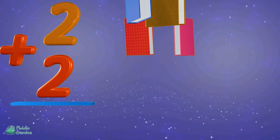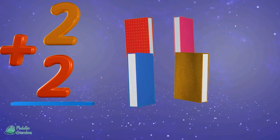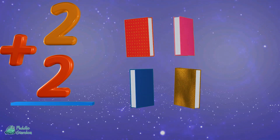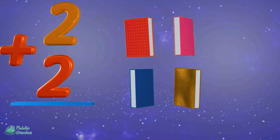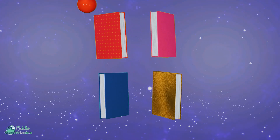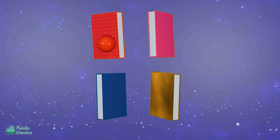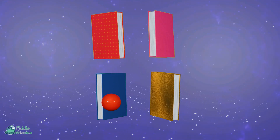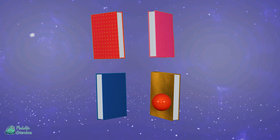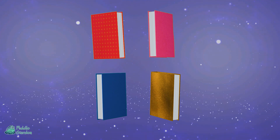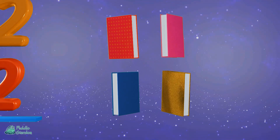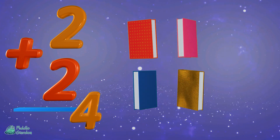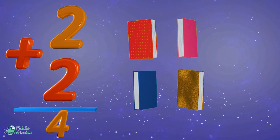Two plus two. If we have two books and we add two more, we are left with how many all together? One, two, three, and four. Two plus two equals four. Four all together. Nice job!